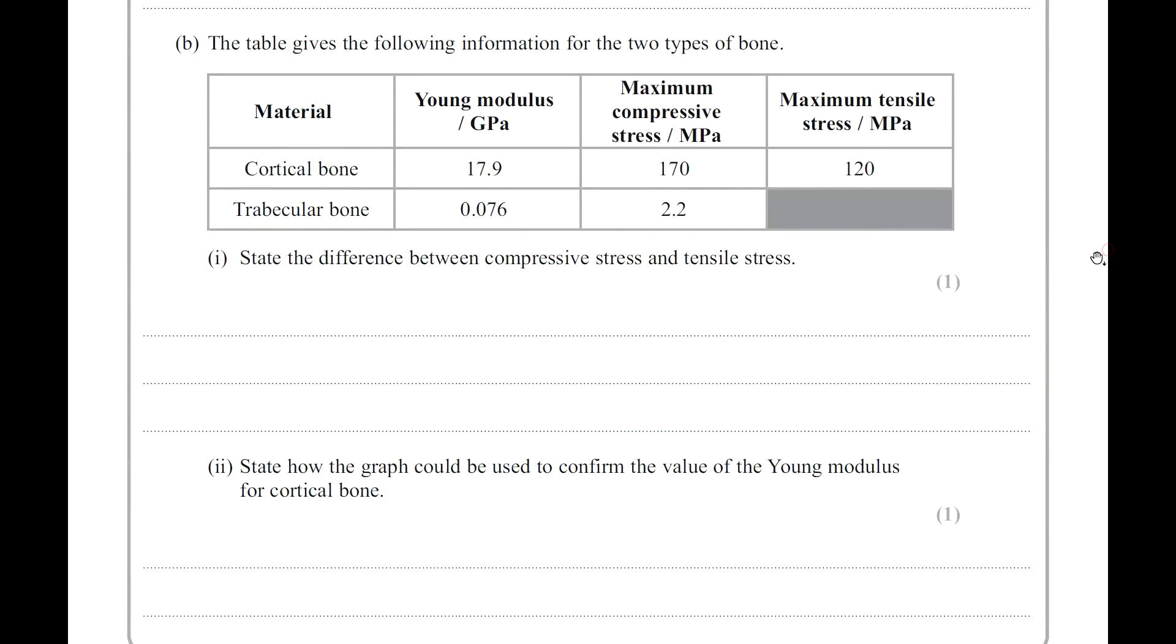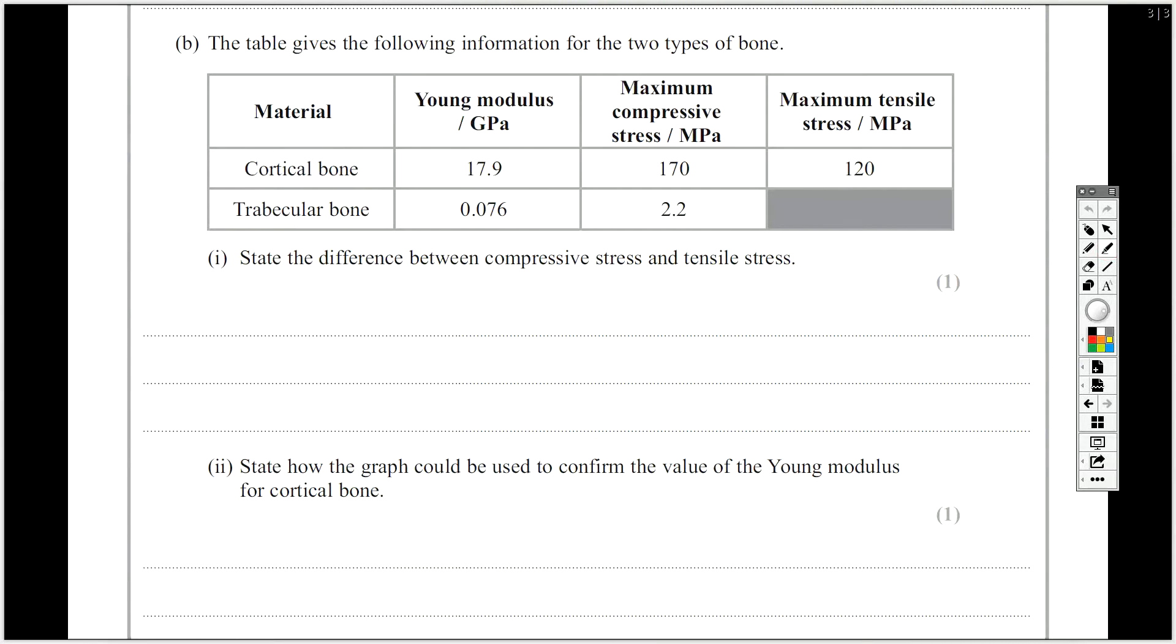So it then goes to talk in a little bit more detail about the actual types of bone. And it asks you to state the difference between compressive and tensile stress. So you can see here we've got maximum compressive stress. Here we've got maximum tensile stress. Well, really what's the difference between compression and tension? Compression means squashing something, and tensile means stretching something. But you're asked to talk about stress.